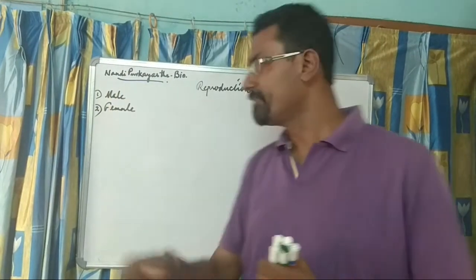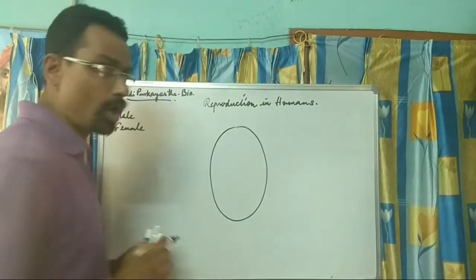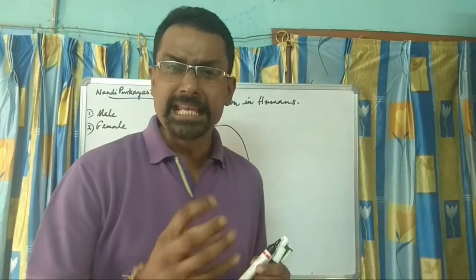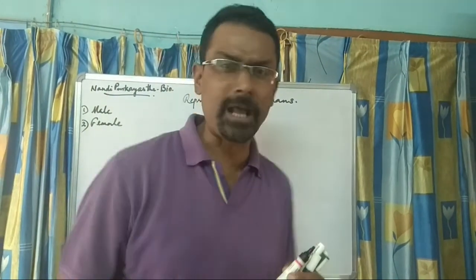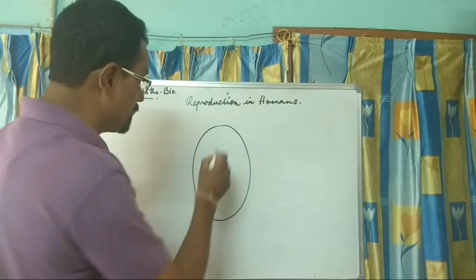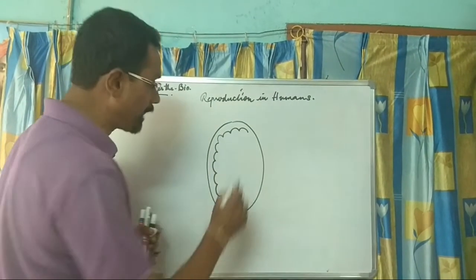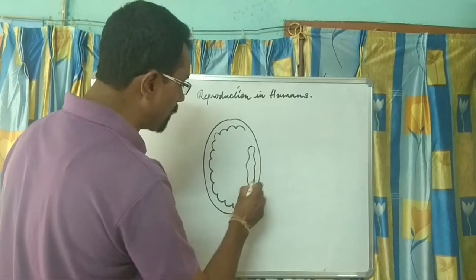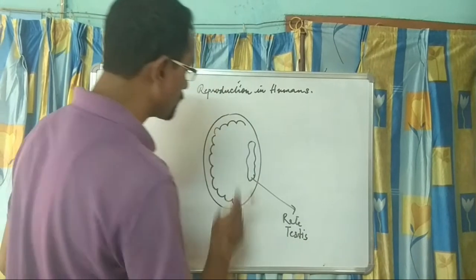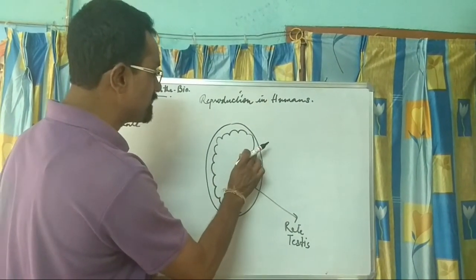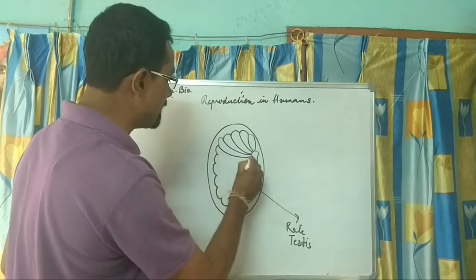First we'll go for the male reproductive system. In the male there are two testes, or we can say one pair of testes, which remain in a muscular sac-like structure called the scrotum (S-C-R-O-T-U-M). Inside the testes there are many compartments, and there is a structure called the rete testis. The compartments converge and enter inside the rete testis.